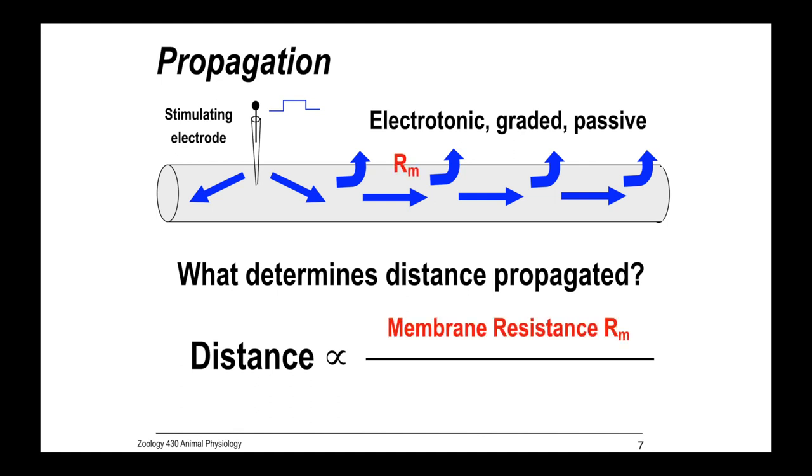The distance is proportional, directly proportional, to membrane resistance. You can think about it like this. If you have a hose and it's full of holes, you can see here all the leaks coming out, you're not going to have much flow through.